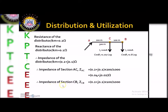Next, impedance of section CB: Z_CB = (0.2 + j0.1) × 100 meters. Since 100 is not in kilometers, we convert: 100 divided by 1000. Multiplying gives Z_CB = 0.02 + j0.01 ohms. So Z_AC = 0.04 + j0.02 ohms and Z_CB = 0.02 + j0.01 ohms.